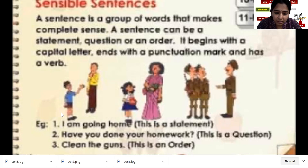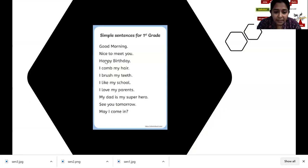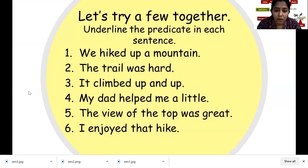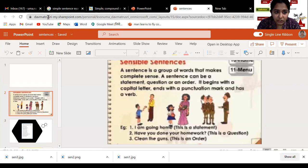'I am going home' - this is a statement. 'Have you done your homework?' - it's a question. 'Clean the guns' - this is an order. Good morning, nice to meet you, happy birthday, I comb my hair, I brush my teeth, I like my school, I love my parents, my dad is a superhero, see you tomorrow, may I come in - these are all different kinds of sentences which have meaning. We hiked up a mountain, the trail was hard, it climbed up and up, my dad helped me a little, the view of the top was great, I enjoyed that hike. These are different kinds of sentences which have meanings.